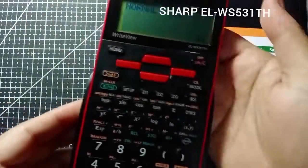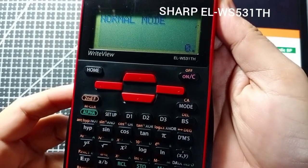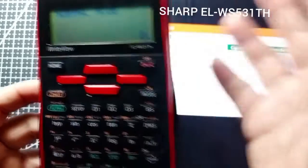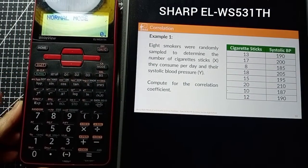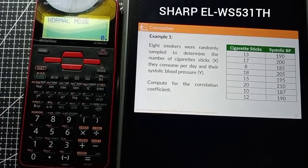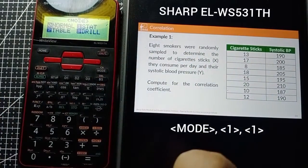This is a video tutorial for calculator shortcut for correlation and regression using the Sharp EL-WS531TH. First, click on Mode.